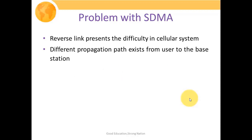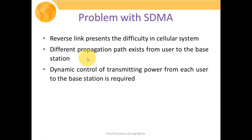The major problem with SDMA is that the reverse link presents difficulty in cellular systems. In the forward link, the signal is transmitted from the base station to the mobile station, whereas in the reverse link the mobile station transmits to the base station. Different propagation paths exist from user to base station depending on user location and physical environments.